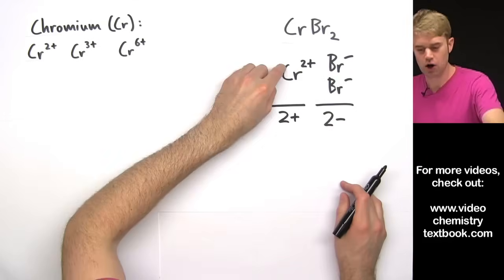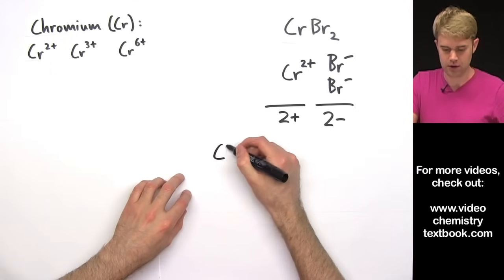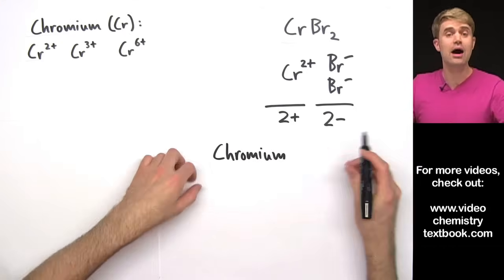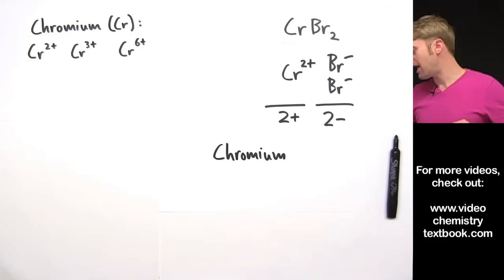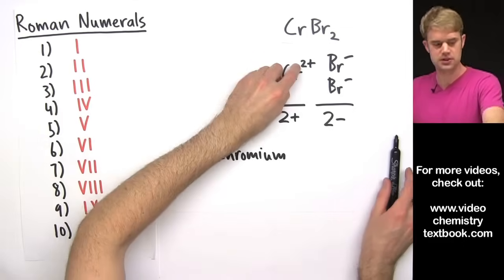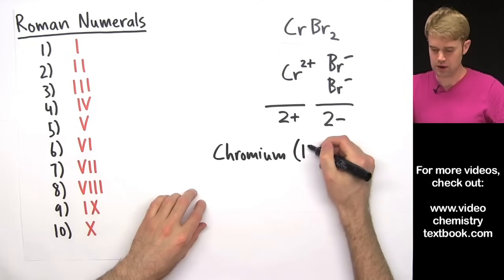So we have 1 chromium 2+, which gives us 2+ of charge, which is balanced out by 2- of charge that is contributed by 2 Br minuses. So that means the charge on chromium is 2+, and we can call this compound chromium.